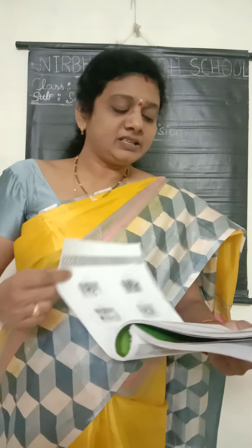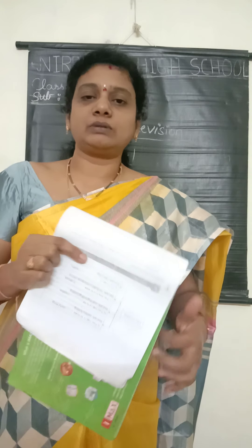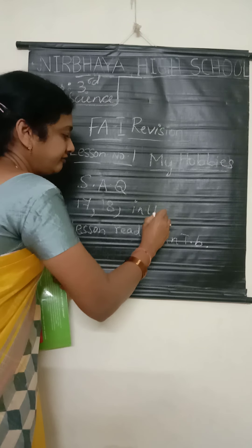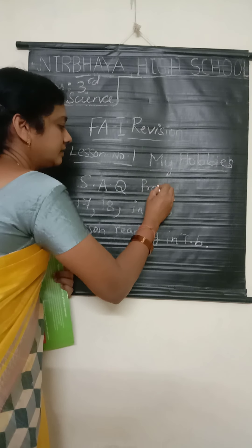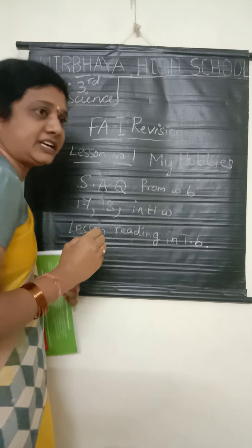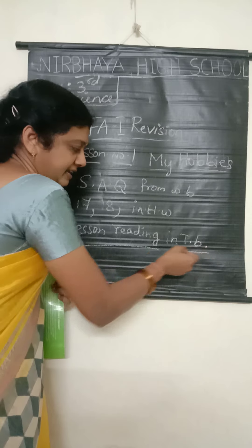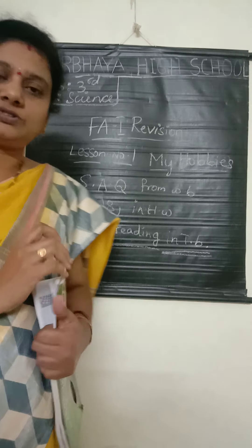Children, write these question answers in your homework book. Write the short answer questions — questions 17 and 18 — in your homework from the workbook. You should copy the question and write the answer like a full statement. After that, you should read the lesson — lesson reading in the textbook.